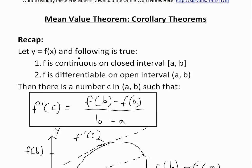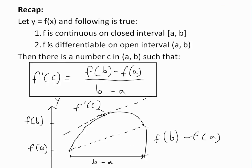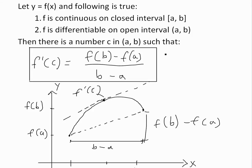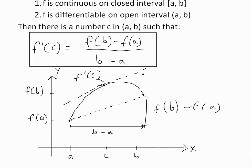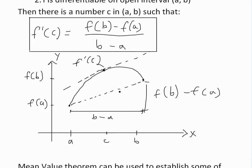Let's quickly recap on the mean value theorem. We have y equals f(x) and the following is true: f is continuous on the closed interval [a, b], and f is differentiable on the open interval (a, b). Then there is a number c in (a, b) such that the derivative at c equals f(b) minus f(a) all divided by b minus a — basically the average slope of the interval.